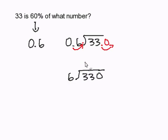6 can't go into 3, so I'm going to put a 0. But 6 can go into 33 about 5 times. 5 times 6 is 30. I subtract and I get 3.